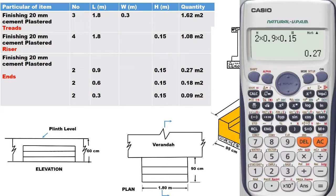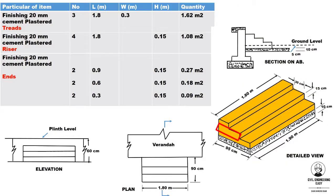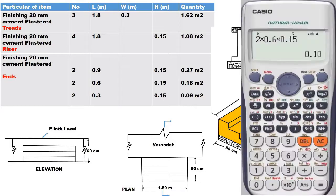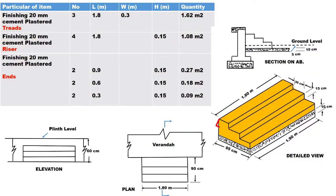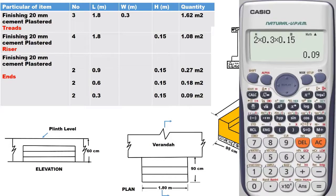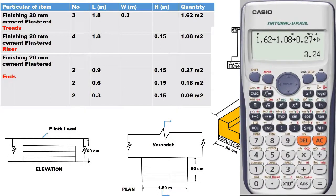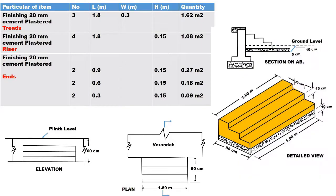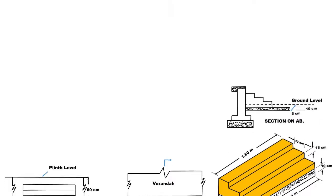The plaster quantity for ends: 2 × 0.6 × 0.15 equals 0.9 square meter. Adding all the total quantities of plaster together gives a total equal to 3.24 square meter.